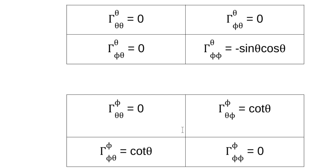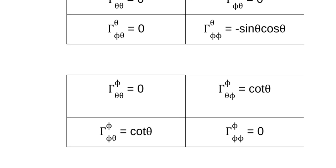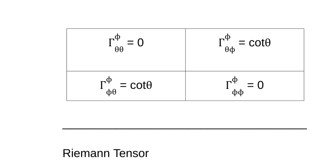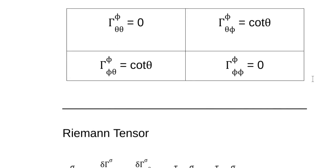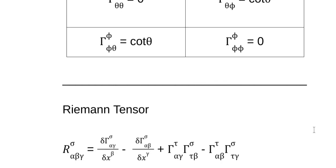So we started with our vector, found the basis vectors, used those to find our metric tensor, used the metric tensor to find our Christoffel symbols — the connection coefficients. Now we're going to use these to find our tensors. Now there's an easy way and a hard way. The easy way would be to write down the expression for the Ricci tensor and plug all of these in, but I'm going to do it the hard way because I learned something and it was more fun. So here is the definition of our Riemann tensor.